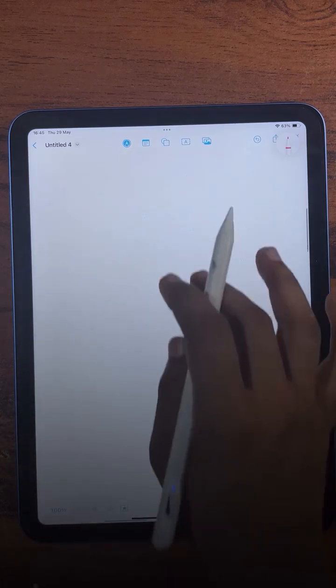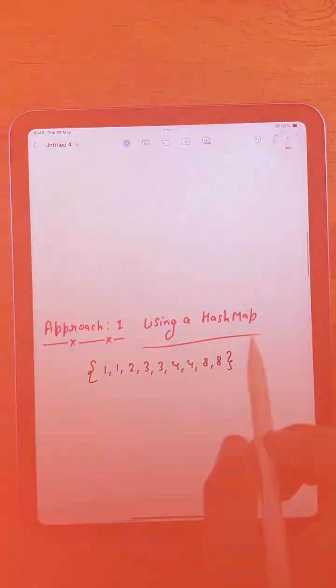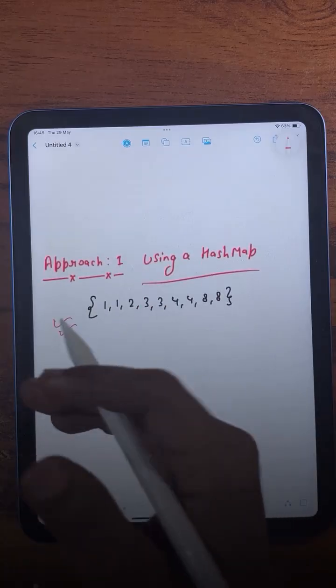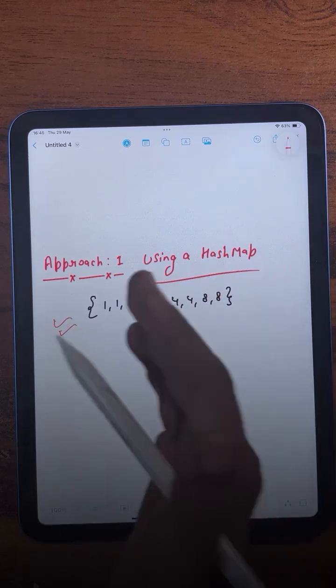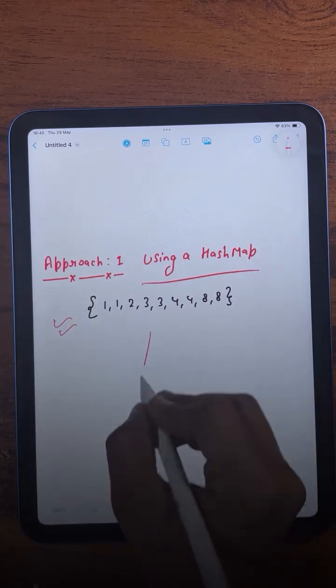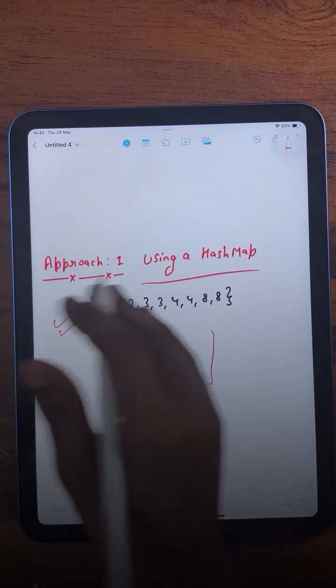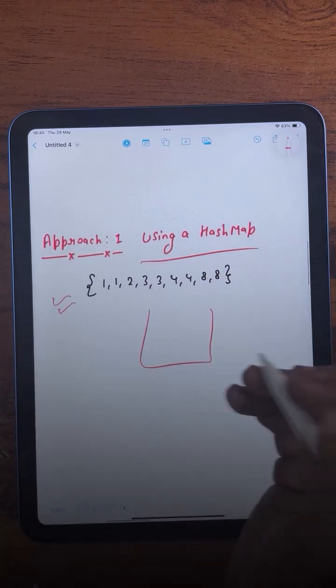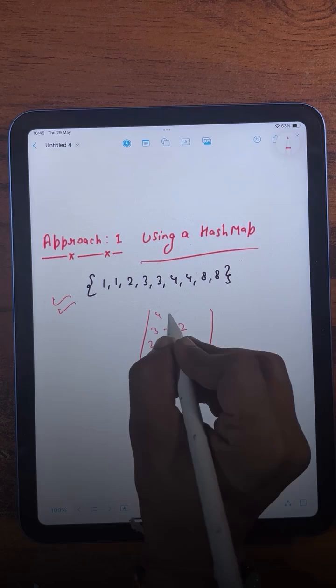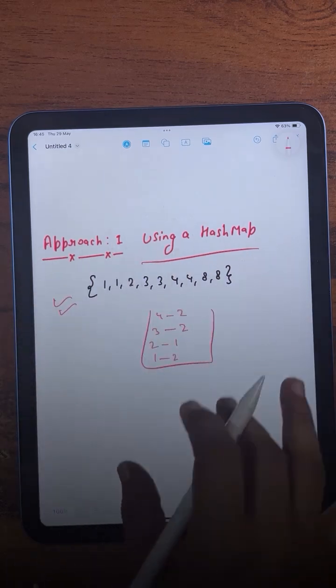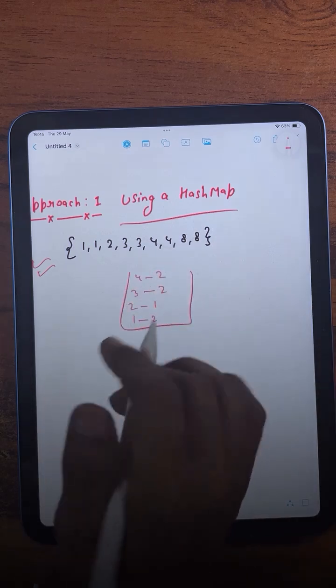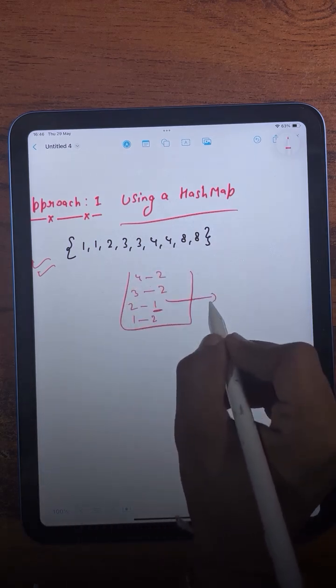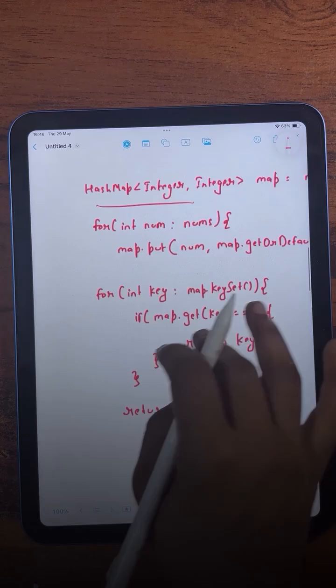In the first approach, we will be using a hash map. Here we will do two things: first, we will iterate over the array and while iterating, we will count the frequency of every element and store that frequency along with the element in the hash map. For example, I will iterate the array and store the frequencies like this. After counting the frequencies, I will loop over the map and check if there is any key that has the value of one. I will simply return that, and that's how we have done the same thing in the code.